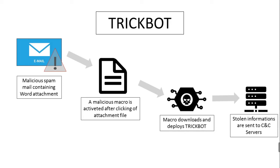I suggest following these recommendations. If you do not have a policy regarding suspicious emails, consider creating one and specify that all suspicious emails should be reported to the security or IT departments. Mark external emails with a banner denoting it is from an external source. Implement filters at the email gateway for emails with known mal-spam indicators, such as known malicious subject lines, and block suspicious IP addresses at the firewall.